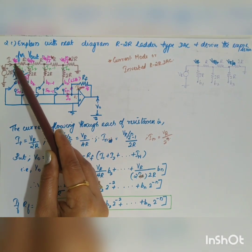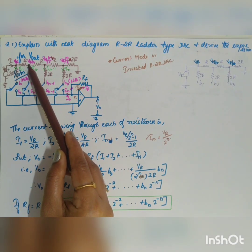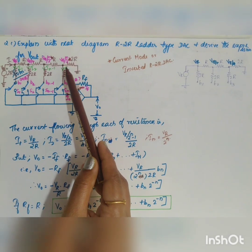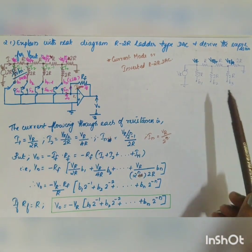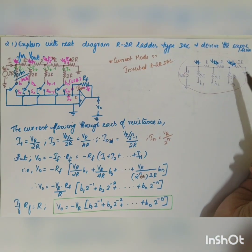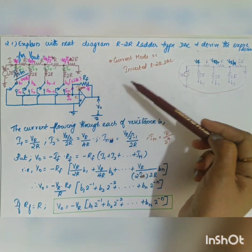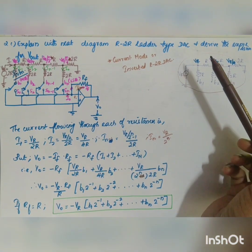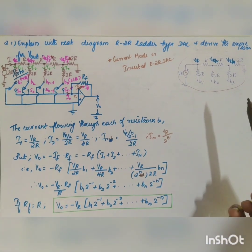The voltage at the first node is equal to VR, the next node voltage is VR/2, and it goes on until the last node which will be equal to VR divided by 2^N. To understand this, let us consider a 3-bit circuit. It is called an R-2R ladder type network because it uses a string of R and 2R resistors. If R equals 1kΩ, then 2R equals 2kΩ. The precision is very high because the current to the ladder and the reference source are independent of the digital input.